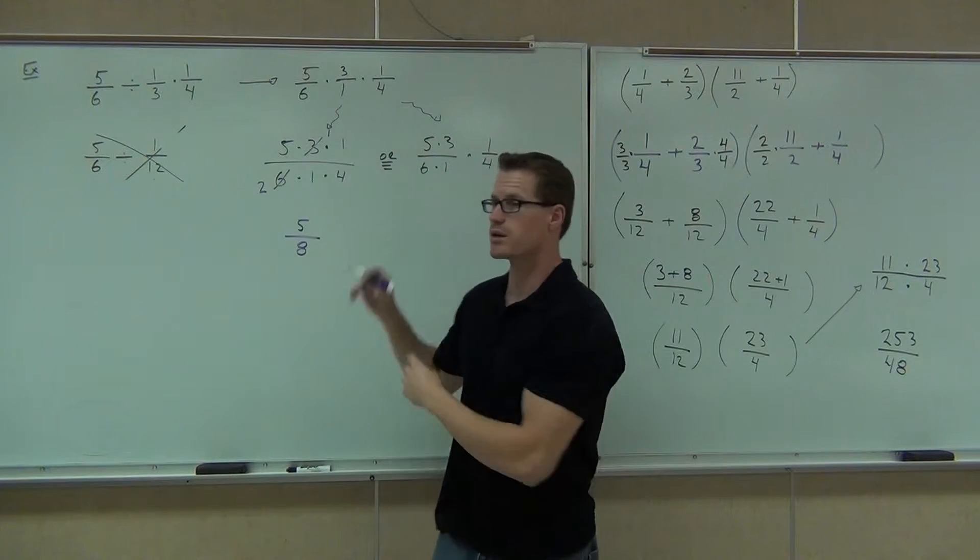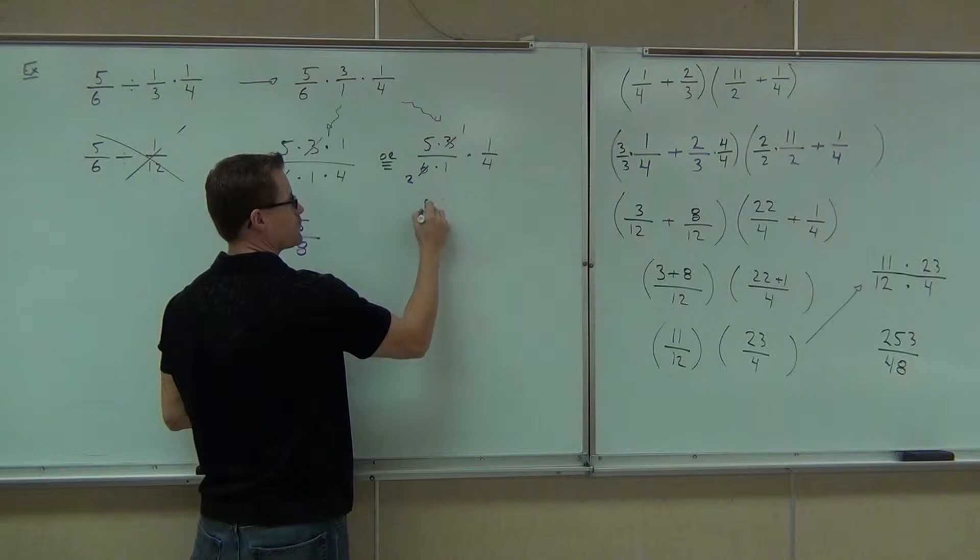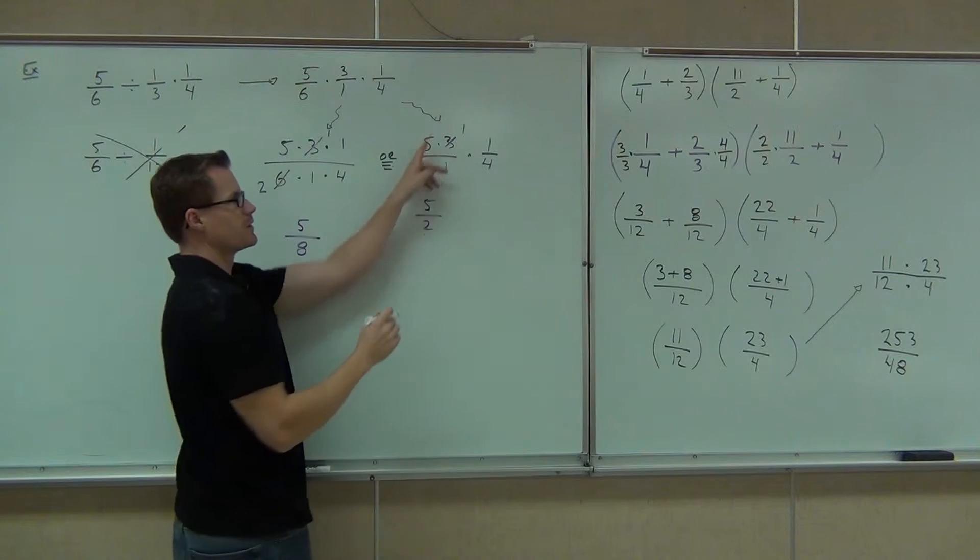Now, we should get the same thing over here. Let's see if we do. Here, the 3 and the 6 will simplify. 1 and 2, you get 5 over 2. This gives you 5 over 2.